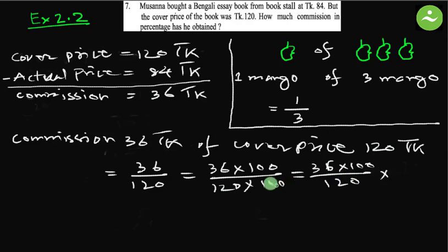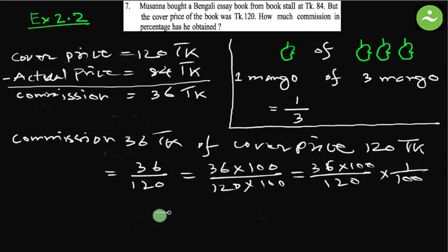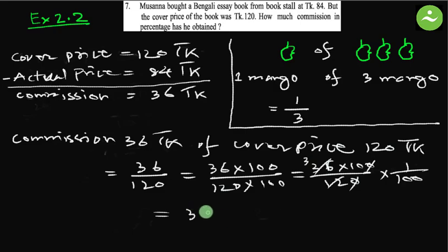This is percent. If we simplify — zero gone, then divide both by 12, this is 3. So it will be 30%.